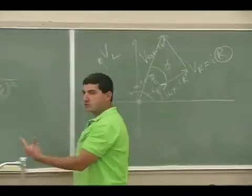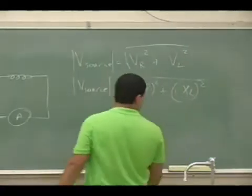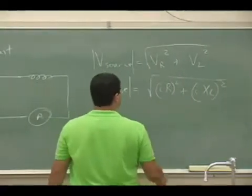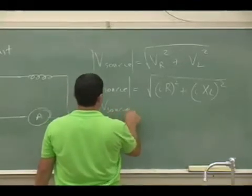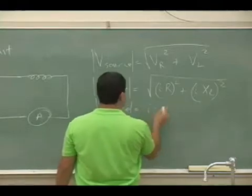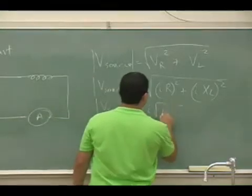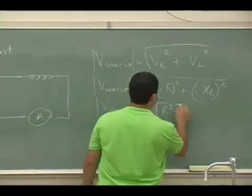Whichever one is bigger, that's the one that's going to be the longer one. So voltage of the source magnitude is going to be I comes out, the square root of R squared plus XL squared.